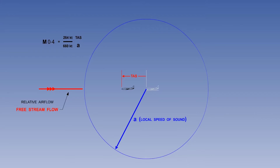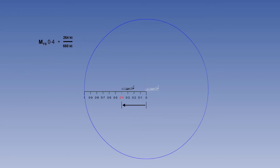We learned earlier that relative air flow can also be called free stream flow. So the Mach number we are discussing here is called the free stream Mach number. The free stream Mach number is basically what is presented on the aircraft Mach meter. The scale shows the aircraft at 4 tenths the distance from the point source to the leading pressure wave.